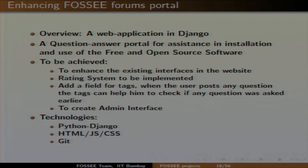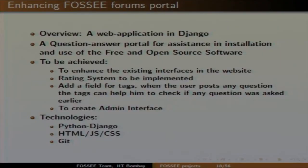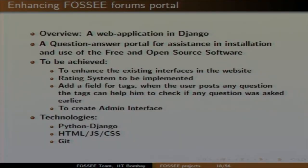The existing system has users posting questions and experts answering — that is the basic flow. We want to enhance it with a rating system similar to Stack Overflow, plus tags so that when you type a question it can fetch similar already-asked questions to reduce duplicacy. We also want to create a proper admin interface — currently everything is done by database — where admins can delete or edit spam questions or answers. Technologies: Python, Django, HTML, JS, CSS, and Git.